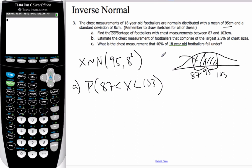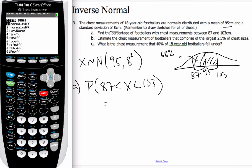so it should be approximately 68% just by estimating. If I use my calculator to do this, I go second variables, normal CDF, and I'm going to go from 87 to 103, 95 is the mean, and 8 is a standard deviation.